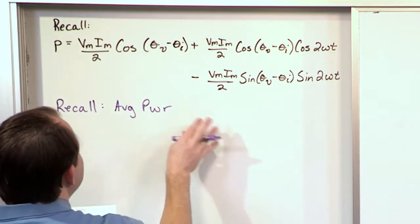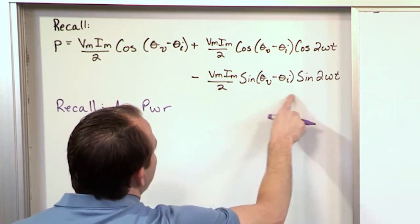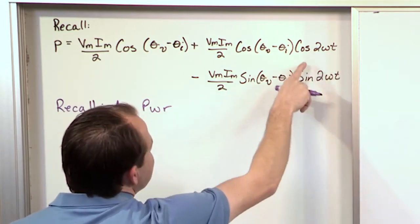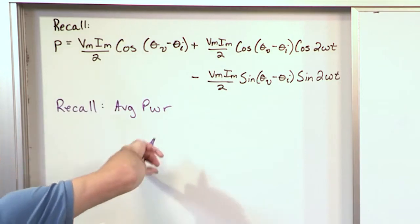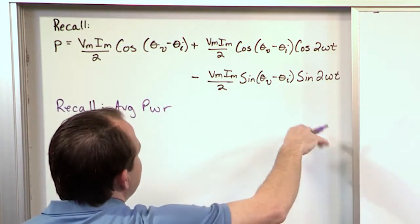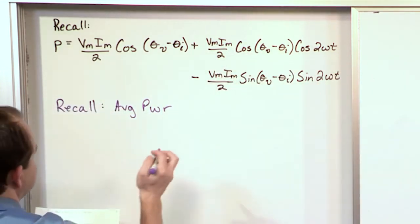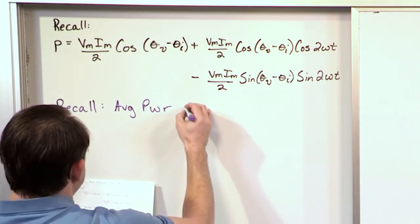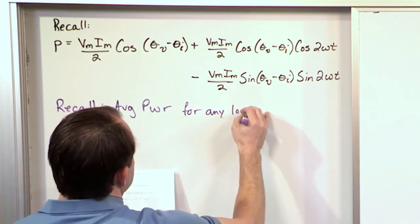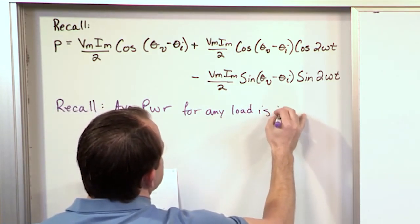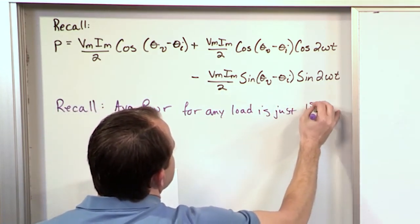When we do that, these two terms drop away. When you integrate these over a period, they drop away because you're integrating on the plus and negative side of the swing, so they basically disappear. The average power for any load is just the first term.